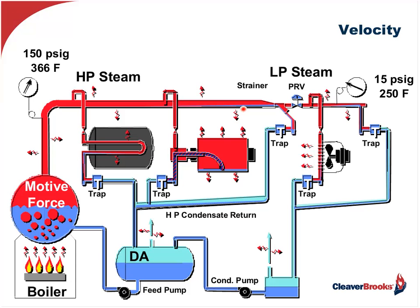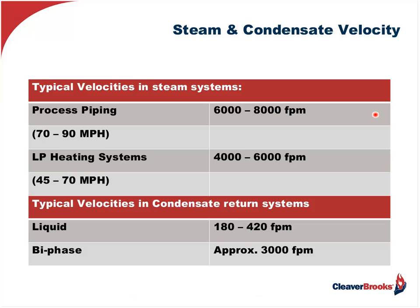As far as velocities are concerned, with process piping we're normally talking between 6,000 to 8,000 feet per minute — between 70 and 90 miles per hour. Low-pressure heating systems are a bit slower at 4,000 to 6,000 feet per minute. As far as condensate liquid, between 180 to 420 feet per minute is most desirable. For biphase condensate return systems, which can have a significant amount of steam in them, you're looking at velocities in the area of 3,000 feet per minute.